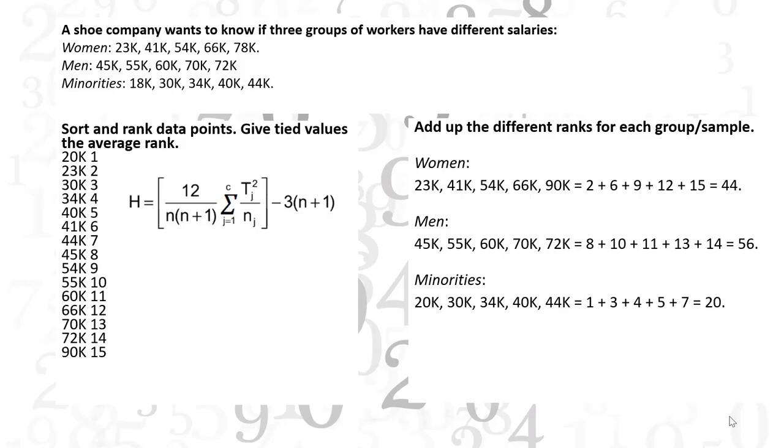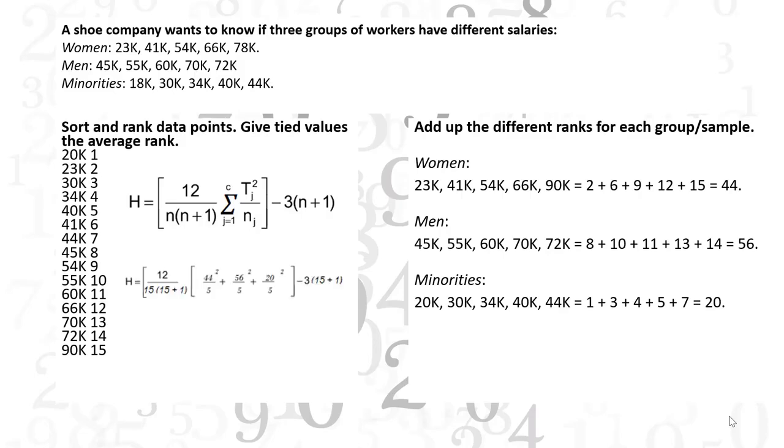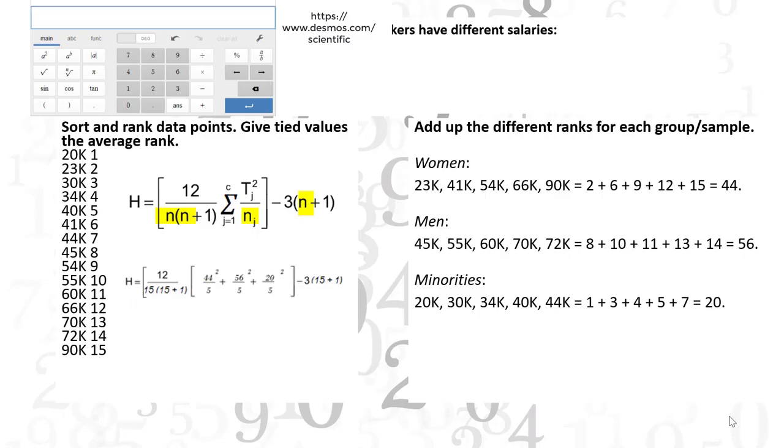Calculate the H statistic. N is the sum of sample sizes for all samples. We have 15.